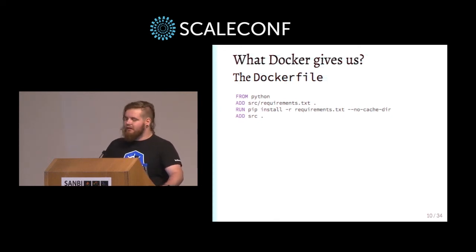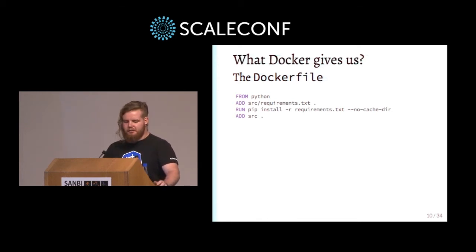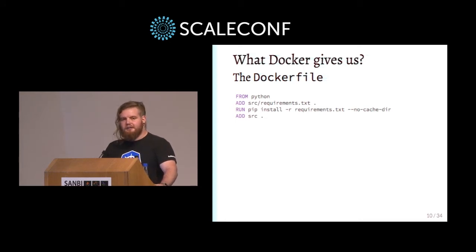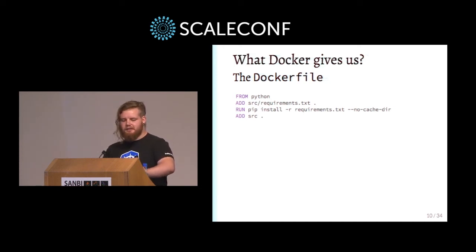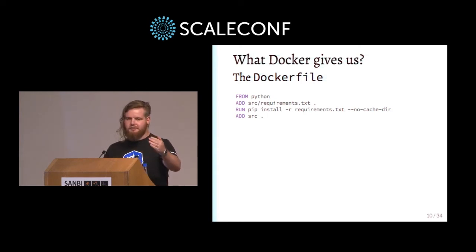To go through this Dockerfile as an example - it uses the base Python Docker image from Docker Hub, which is basically a snapshot of a small Debian install with Python. Then you add your requirements, pip install them, and add the rest of your source code. Docker has really efficient build caching - a huge benefit. It hashes each ADD line, so if anything in the source directory changes that isn't requirements.txt, it only invalidates the bottom line and only re-runs that step. Only if requirements.txt changes does it go back and re-pip install.